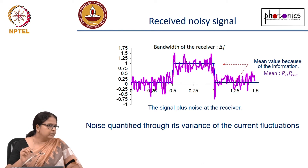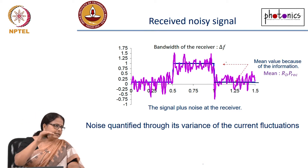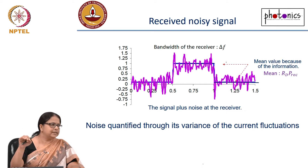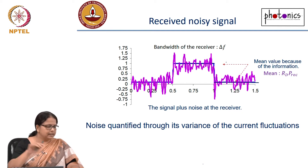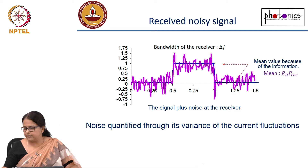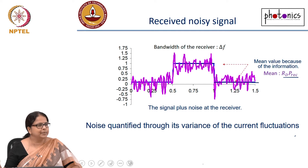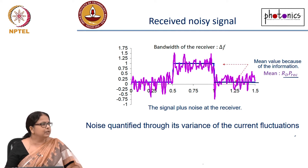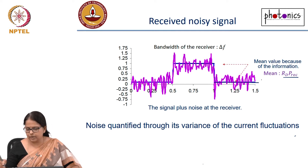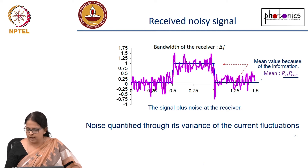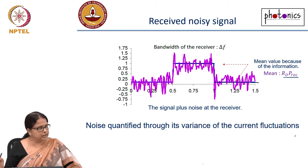You take the mean of the pink — that will give you the mean signal. So that is the average Rd·P received. Rd is the responsivity, P is your received power, whether it is for 1 or whether it is for 0, corresponding received power. That is what you would use for threshold detection.